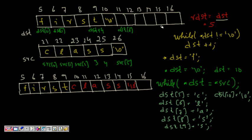With `dst` at location 5, `*dst` is not '\0' so we move to 6; `*dst` is not '\0' so we move to 7; again not '\0', and we keep moving until memory location 10 where `*dst` is '\0', so we stop there. Then using `while (*dst++ = *src++)`, starting at location 10, I copy src[0] which is 'c', then 'l', 'a', 's', 's', and finally copy the '\0' as well.